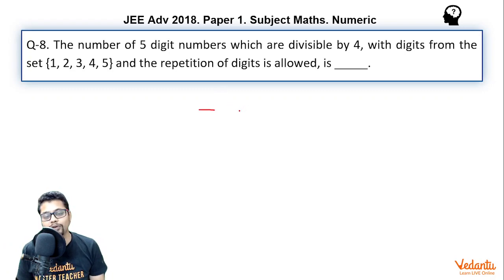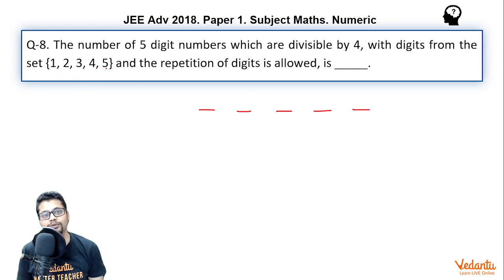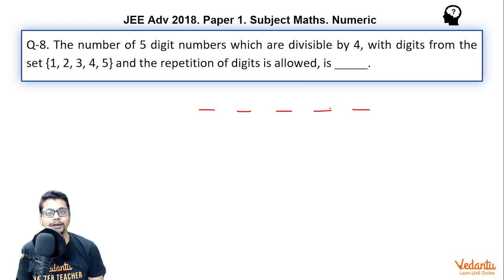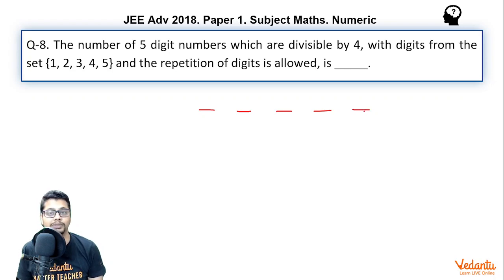That is essentially the number made by the last two digits of the number should be divisible by 4. So if we are looking for a 5-digit natural number whose digits belong to the set 1, 2, 3, 4, 5, then the number formed by the last two digits should be divisible by 4. We just need to check what two-digit numbers can be made from these five digits such that the two-digit number is divisible by 4.